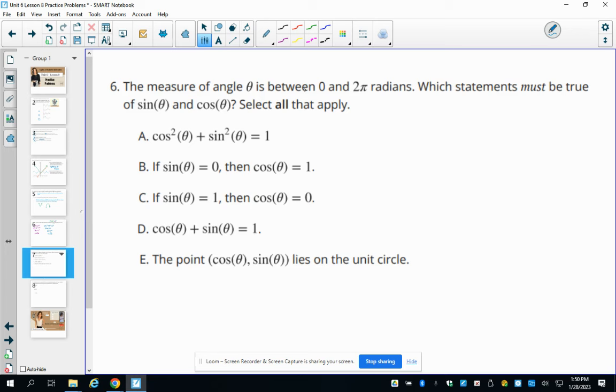Number six, the measure of angle theta is between 0 and 2 pi radians. Which statements must be true about sine and cosine? Select all that apply. So cosine squared plus sine squared equals 1. And yes, that's a Pythagorean triple, or not triple, but that's the Pythagorean identity. If sine of theta equals 0, then cosine of theta automatically equals 1. So let's look at where sine equals 0. That's when the y value is 0. So we're here. So this is 1. And the cosine is 1 because cosine is x. Sine is y. But we could also be over here at negative 1, 0. So if sine is 0, so we know sine is 0, then cosine has to be 1 is false.